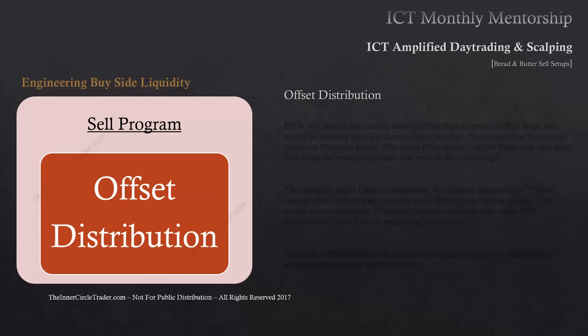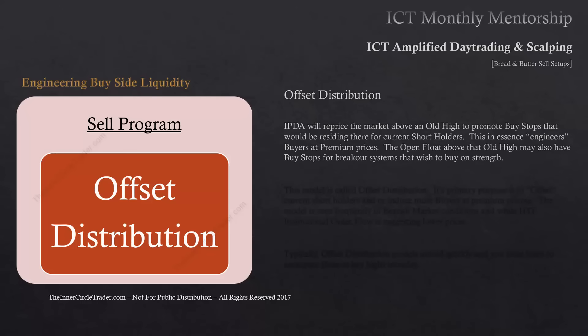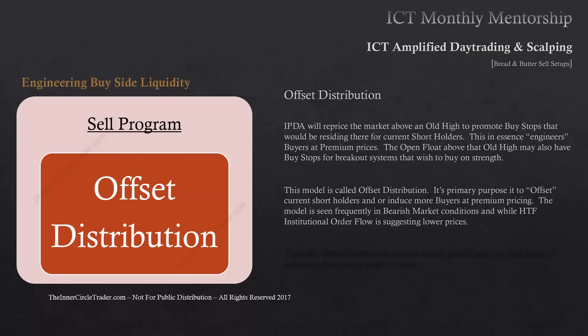Engineering buy side liquidity — offset distribution. IPTA will reprice the market above an old high to promote buy stops to market orders that would be residing there for current short holders. This, in essence, engineers buyers at premium prices. The open float above that old high may also have buy stops for breakout systems that wish to buy on strength. This model is called offset distribution. Its primary purpose is to offset current short holders and/or induce more buyers at a premium price. The model is seen frequently in bearish market conditions while higher time frame institutional order flow is suggesting lower prices. Typically, offset distribution models unfold quickly and you must learn to anticipate them at key highs intraday.